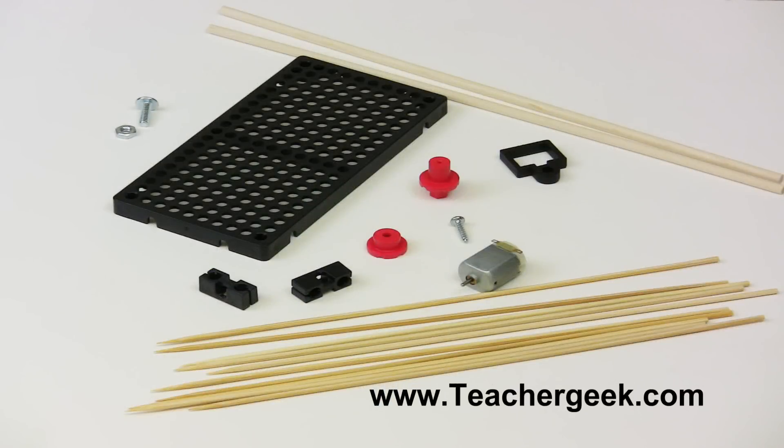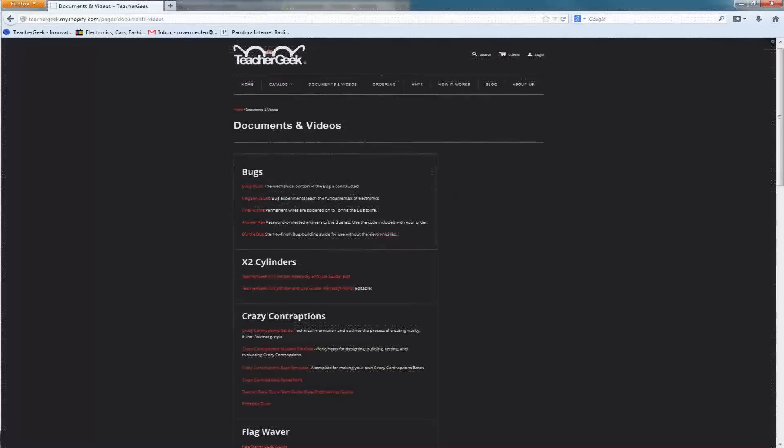A list of the parts needed can be found on the MiniWinTurbine basic build sheet found on teachergeek.com under documents. Components and free documents for this activity are available at teachergeek.com.